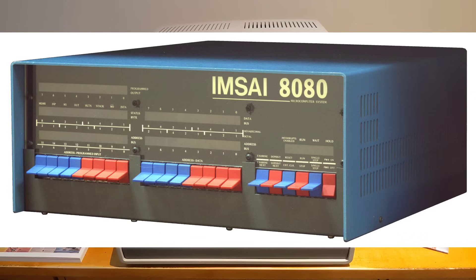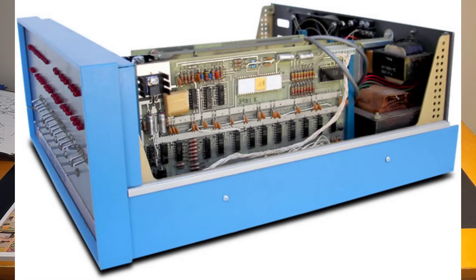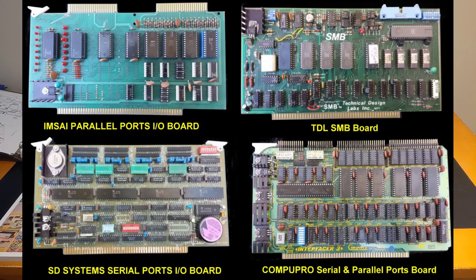Based on the success of the Altair, a number of companies got into the market offering compatible systems. The Altair used a design with a backplane and card cage supporting expansion boards that used a 100-pin edge connector that became a de facto standard known as the S100 bus. Most Altair-compatible systems used the S100 bus, and a number of manufacturers started offering boards for this market, such as memory, input-output, and floppy disk controllers.